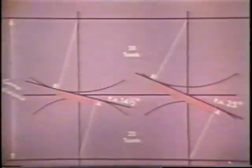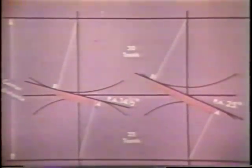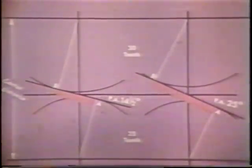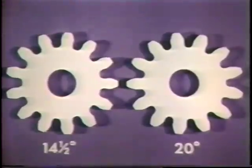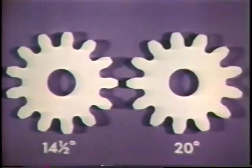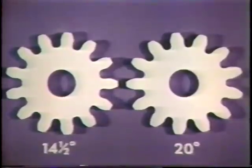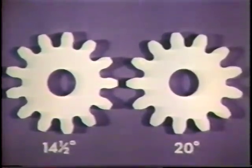Distance AB is the total length of the line of action, and as you can see, it becomes greater as the pressure angle is increased. The difference in tooth shape of standard gears generated to operate with their mating members on standard center distance at 14.5 and 20 degree pressure angles respectively is shown here. As the pressure angle is increased, it can be seen that the base of the 20 degree tooth on the right becomes stronger.